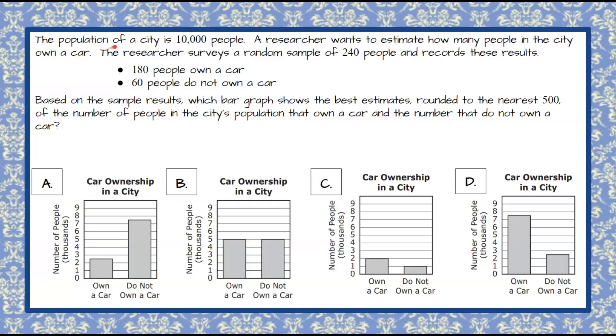The population of a city is 10,000 people. A researcher wants to estimate how many people in the city own a car. The researcher surveys a random sample of 240 people and records these results. We know that 180 people own a car and 60 people do not own a car from this random sample of 240 people.